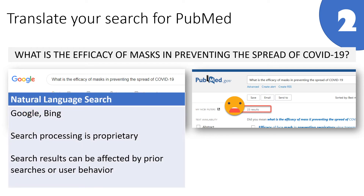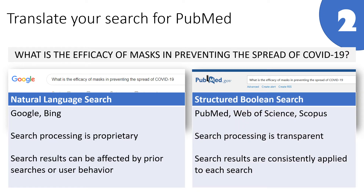Search engines like Google use natural language processing to interpret your search strategy. This type of searching is done behind the scenes using sophisticated proprietary search algorithms, and past searches can affect the results that you see. Databases like PubMed use Boolean logic to interpret your search and to retrieve relevant articles. This type of searching is very transparent, with documentation showing how your search terms were put together, and results are consistently applied to each search regardless of your past behavior.